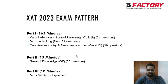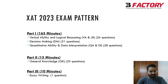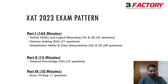Decision Making also includes Analytical Reasoning, which is similar to the LR-type questions in CAT. Last year there were no Analytical Reasoning questions, but you can always expect one or two sets. For Quantitative Ability and Data Interpretation, it's similar to CAT's QA and DI. General Knowledge is a separate section, and there's also a short essay of around 200 words.